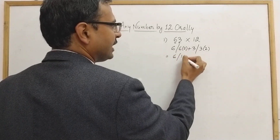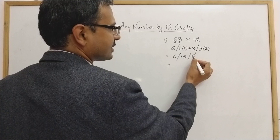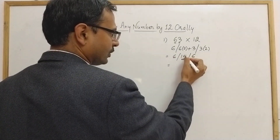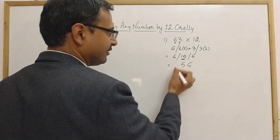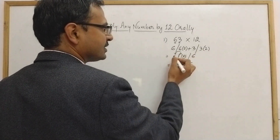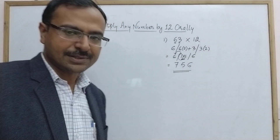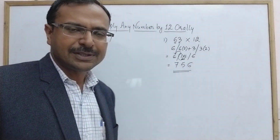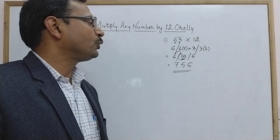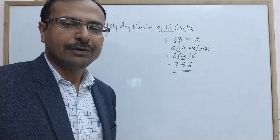So we have: 6, then 12 plus 3 = 15, then double of 3 = 6. Now write the answer from the right-hand side: 6, then 15 — it's two digits, so retain the units digit 5 and carry 1 forward. 6 plus 1 = 7. So the answer is 756. You might think the traditional method is easier, but for five- or six-digit numbers, this method becomes much more comfortable.